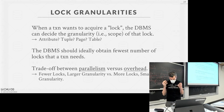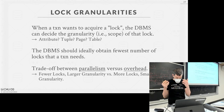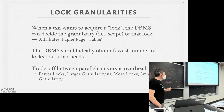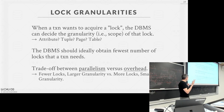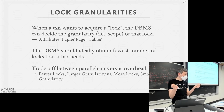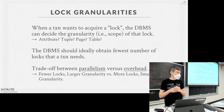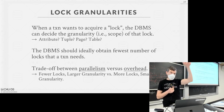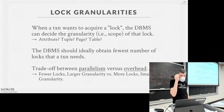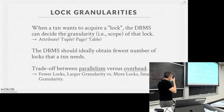Remember last class we were talking about two-phase locking, where we acquire shared locks and exclusive locks on database objects. I didn't necessarily specify what those objects were. If we just assume it's tuples, there's going to be a high performance overhead — if we need to update a billion tuples, we have to acquire one billion locks, which is really expensive.